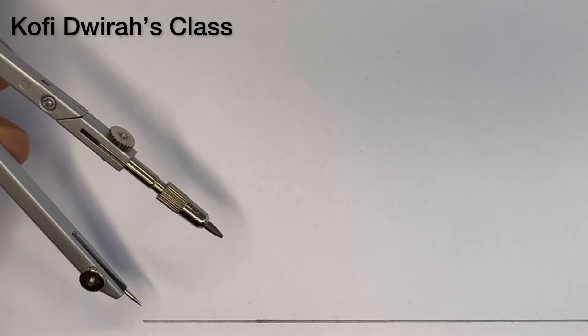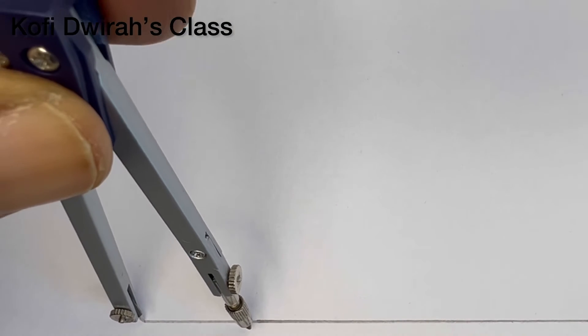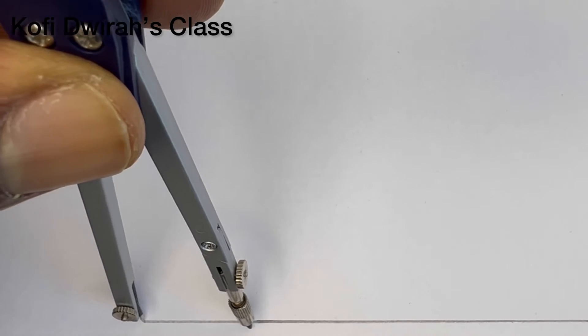First draw a line, a horizontal line like this. Then measure 3 centimeters, which is 30 millimeters. Now we have this to be 30 millimeters, which is 3 centimeters. You mark here. So we consider this point to be point A and here to be point B.